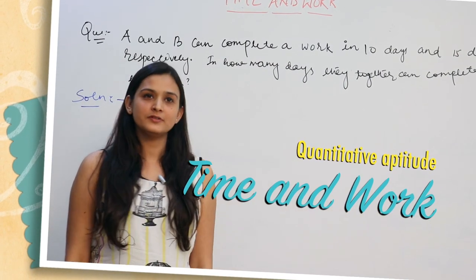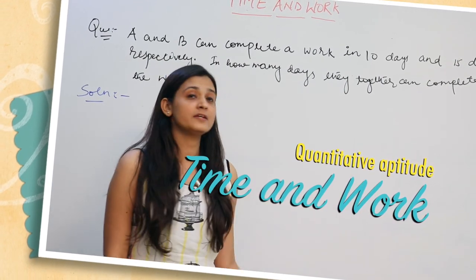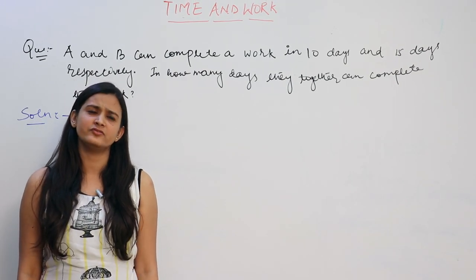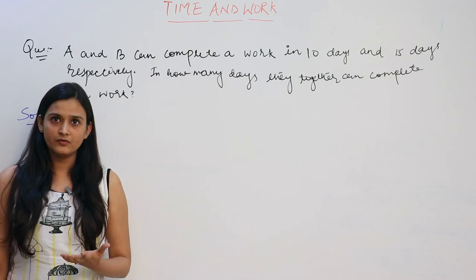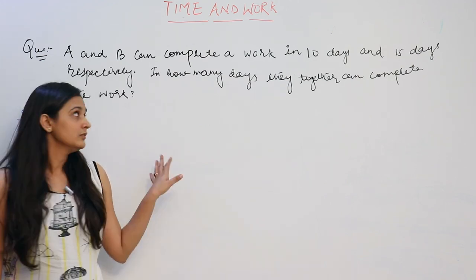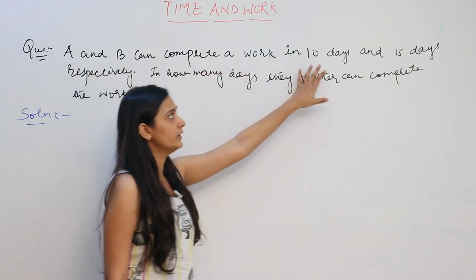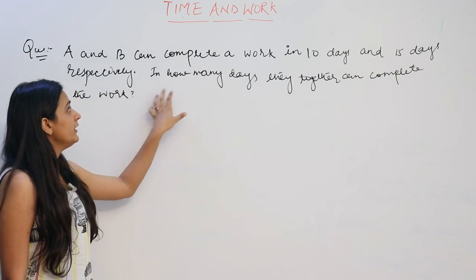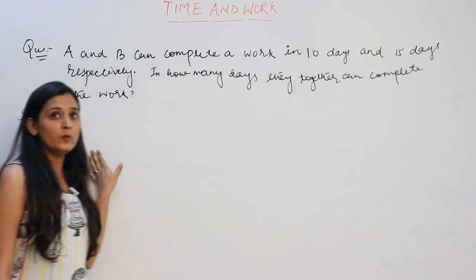Hello friends, today we are going to discuss the topic Time and Work, as this topic is very important for competitive exams like SSC, banking, RBI, etc. Today we will discuss time and the efficiency of a person. We will start from a basic question: A and B can complete a work in 10 days and 15 days respectively. In how many days can they together complete the work?